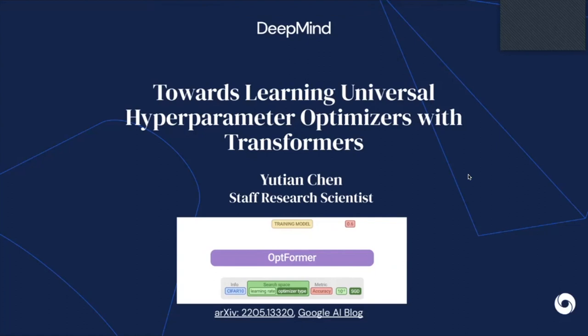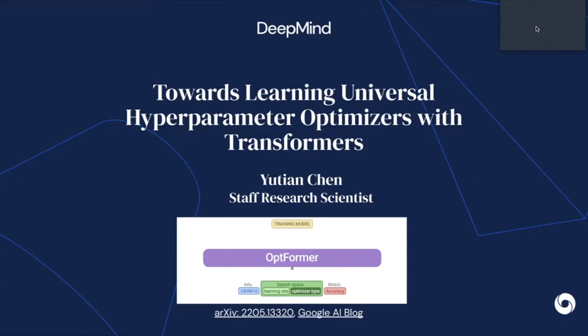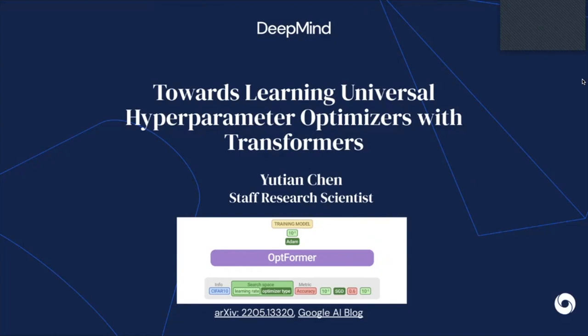Hi everyone. This is Deep Learning Classics and Trends. This Friday we're covering a paper called Optformer: Tuning Hyperparameters with Transformers. We are recording, so if you don't want your faces or voices shown, you can be careful with that. Without further ado, let's get started because I know it's a big paper and we have more than one author online.